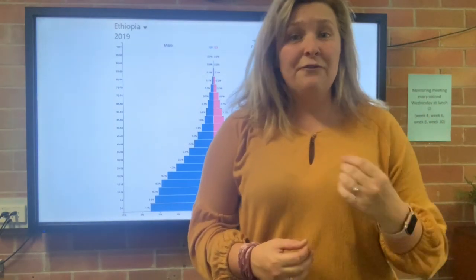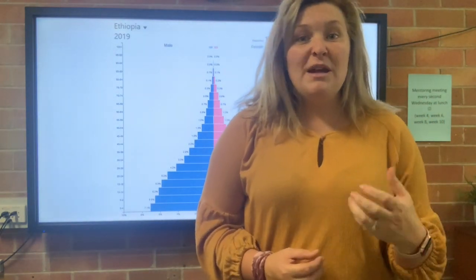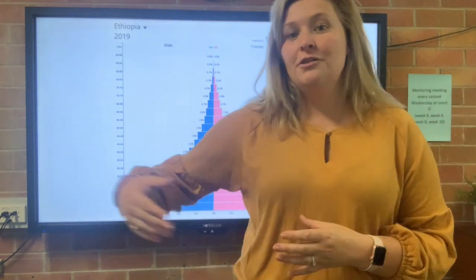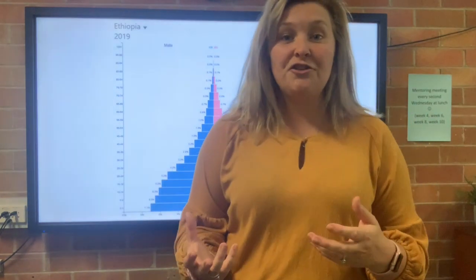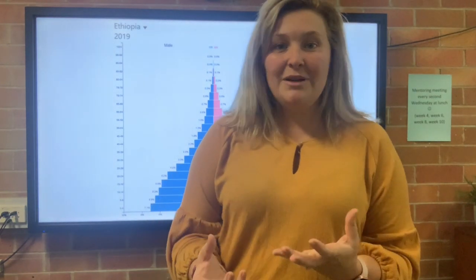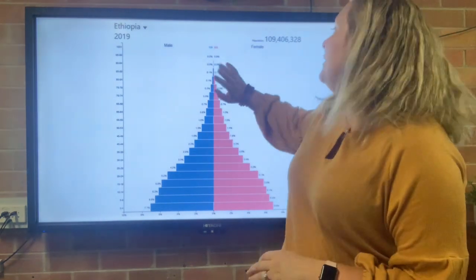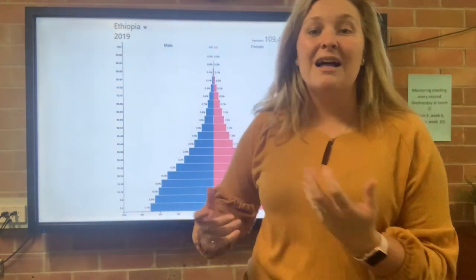What that concave shape means is, unfortunately, there's a high mortality rate — people are dying and not making it to the full age that they could. This is usually associated with lesser access to health services. The last thing we look at is the top of the peak — how many people are in that 90 to 95 and 100 plus age range? That tells us a lot about life expectancy: how old are people expected to live in Ethiopia?